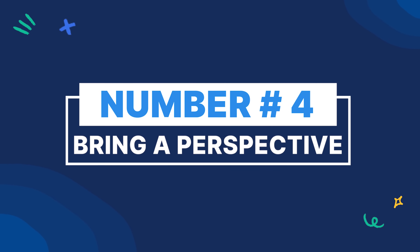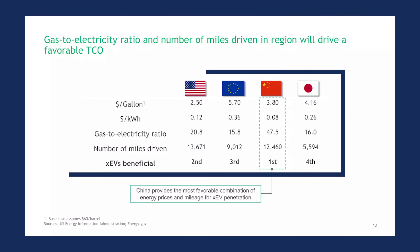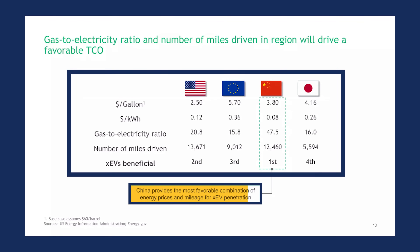Number four: bring a perspective. Tell the audience what you see when you look at the data. Let's look at an example from BCG, specifically from a presentation on electric cars. The slide shows a table comparing the viability of electric cars in different markets. The callout at the bottom states: "China provides the most favorable combination of energy prices and mileage for EV penetration." This is what a viewer will understand after reading the whole table, but by writing it in a callout, they have brought a perspective to it, which makes it easier for the audience to grasp in seconds.